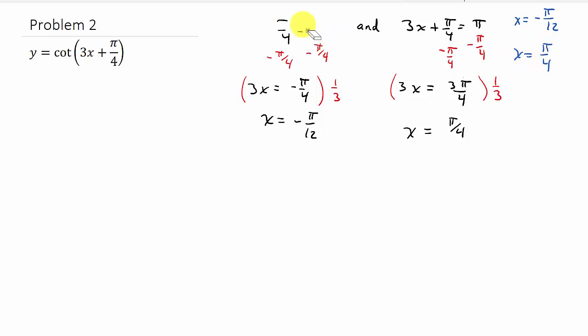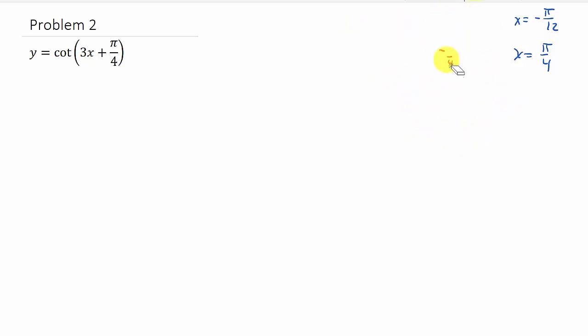Alright, so we have got x equals negative π over 12, and we've got x equals π over 4. And I'm going to erase all of this to give me some room.